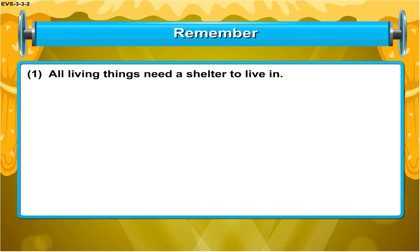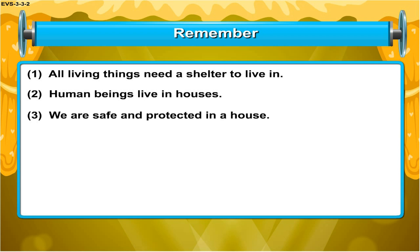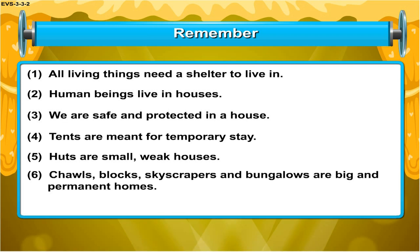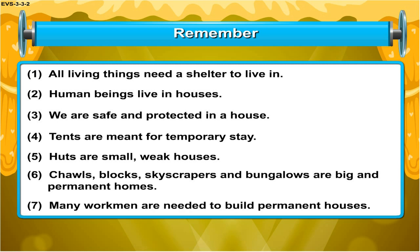Remember: All living things need a shelter to live in. Human beings live in houses. We are safe and protected in a house. Tents are meant for temporary stay. Huts are small, weak houses. Chawls, blocks, skyscrapers and bungalows are big and permanent homes. Many workmen are needed to build permanent houses.